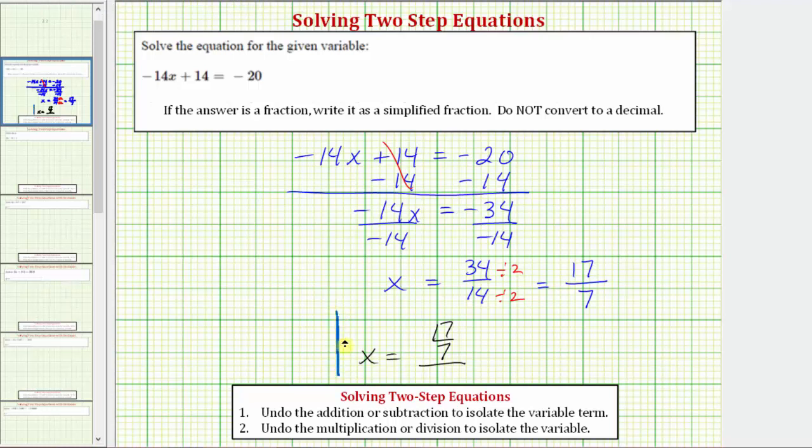Before we go, let's check our work by substituting 17 sevenths for x in the original equation to make sure it does satisfy the equation. Performing the substitution, we would have negative 14 times 17 sevenths plus 14 equals negative 20.